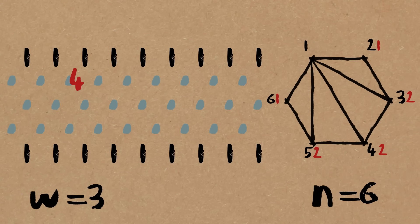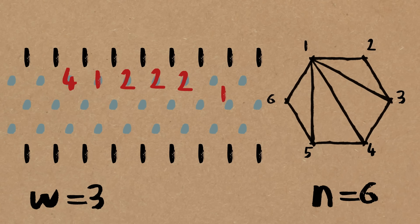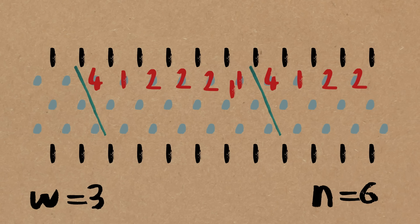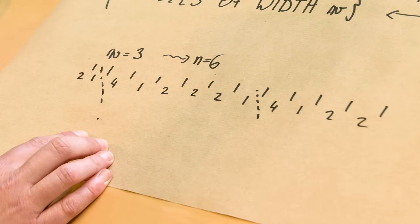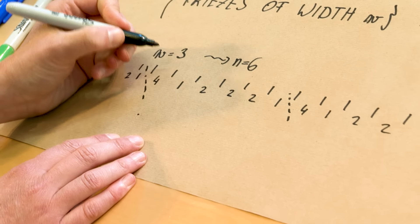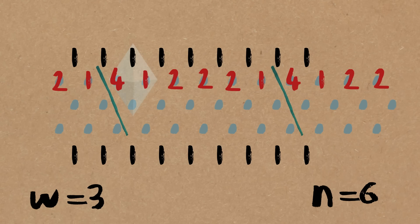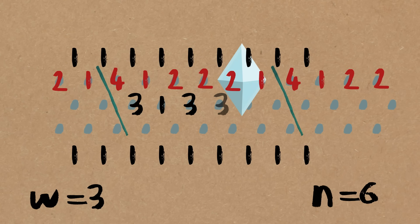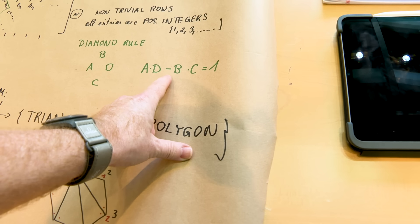I start with four, one, two, two, two, one — and then just periodically continue with it. On the other side I can also continue: one, two, and so on. Now with the freeze rule, we can calculate all the other entries. So four times one minus one times three is one. One times two is one — three, three, one, three. You're making all the diamonds obey the rule. Exactly. You can also write it as C equals AD minus one divided by B.